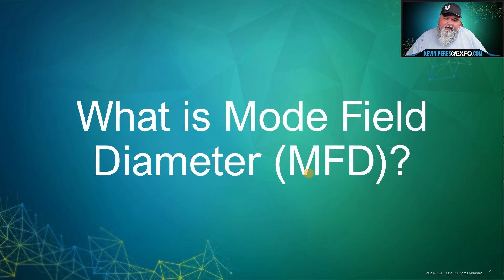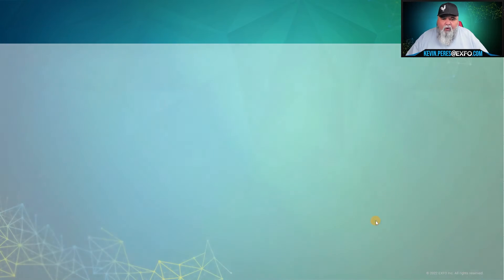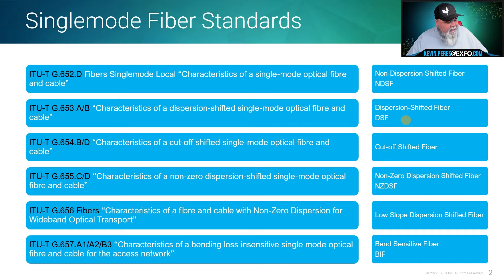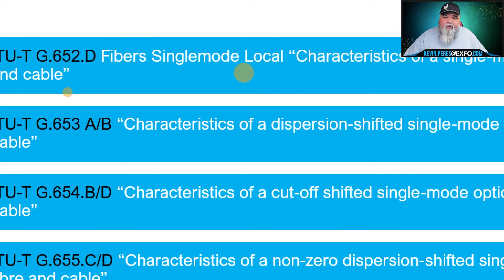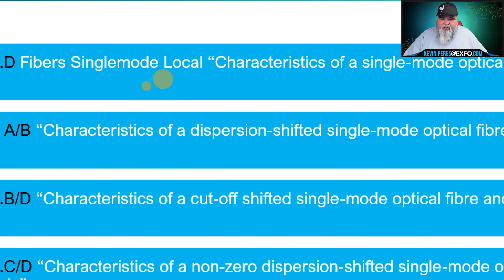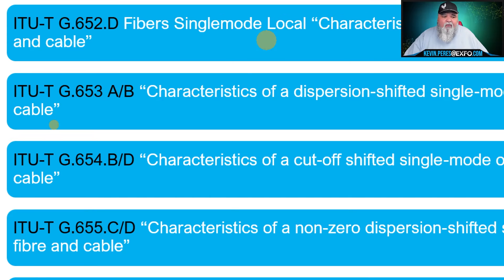It is important to understand that there are different types of fibers out there. Based on the ITU standards, to the right we have the standard names we use, because we don't often say G.652.D — we'll say standard single mode fiber. Most of the fiber we deal with today is G.652, the predominant single mode fiber used in fiber optic networks across the world.